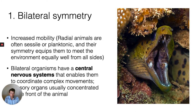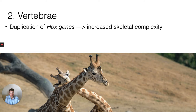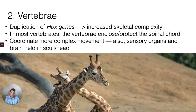Another important trait was the evolution of vertebrae. This resulted from the duplication of Hox genes, which we talked about previously. In most vertebrates, the vertebrae actually encloses and protects the spinal cord. Together with the muscular system, the vertebrae helps coordinate more complex movement.